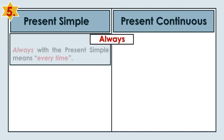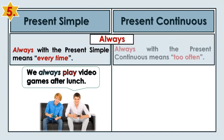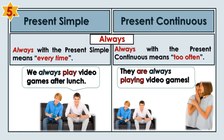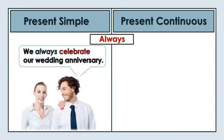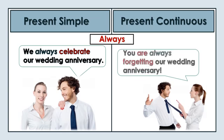Always. Always with the Present Simple means every time. We always play video games after lunch. Always with the Present Continuous means too often. They are always playing video games. We always celebrate our wedding anniversary. You are always forgetting our wedding anniversary.